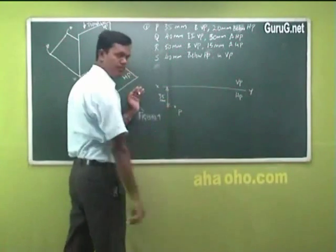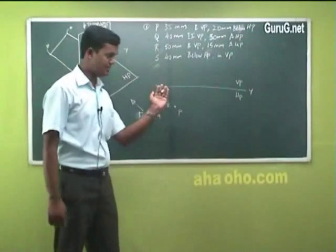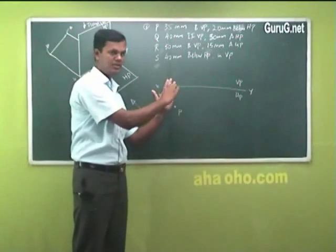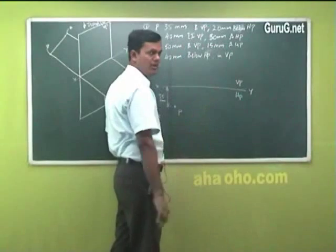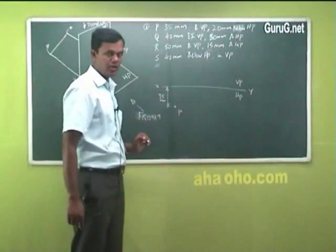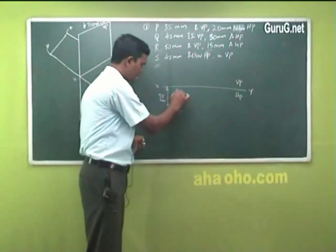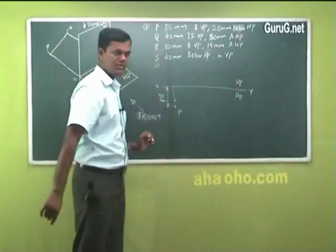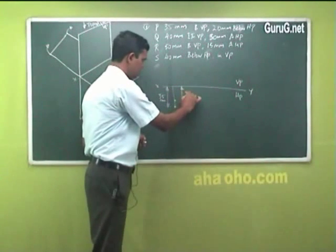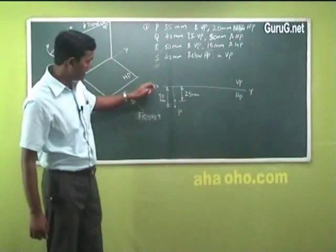35 mm. Now it is behind 35 millimeter VP, and 20 millimeter below HP. See, this is the HP line — below HP, the paper is like this. Below HP is 20 millimeter. How will you see this? In the front view you can see there is something below HP — 20 millimeter. The placement of point is very very important because 35 millimeter behind — you should imagine this is VP, and behind means from the top only you can see that distance.